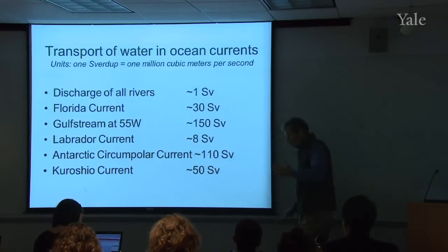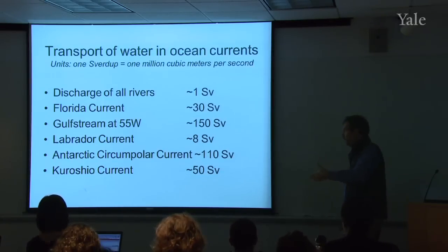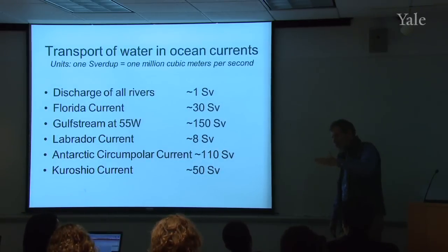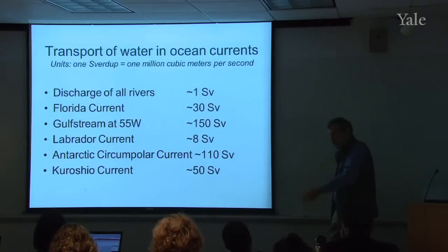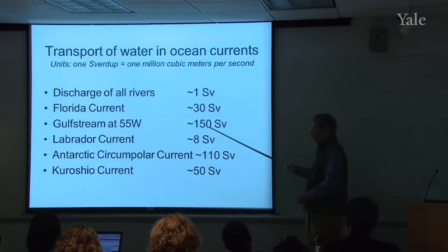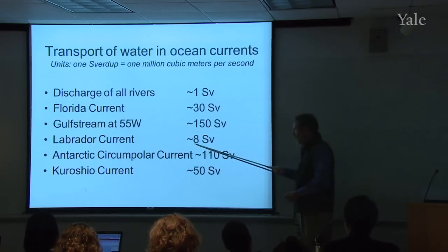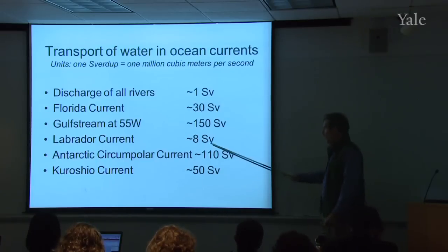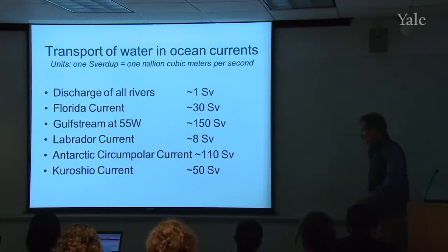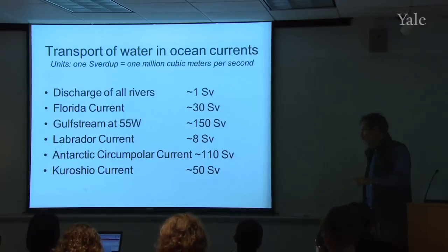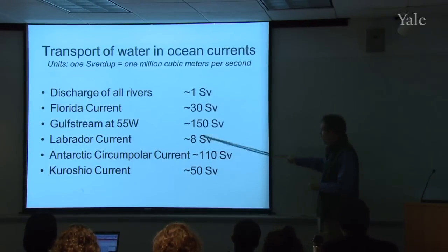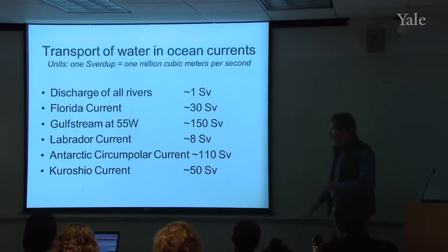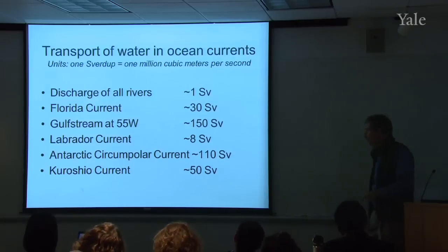The Florida Current, where the Gulf Stream passes along Florida's coast, has about 30 Sverdrups. But a few hundred miles north, where it leaves Cape Hatteras heading eastward, it's grown to 150 Sverdrups — one of the strongest currents in the world. The Labrador Current is about 8 Sverdrups, the Antarctic Circumpolar Current at Drake Passage is 110 Sverdrups, and the Kuroshio is 50 Sverdrups.